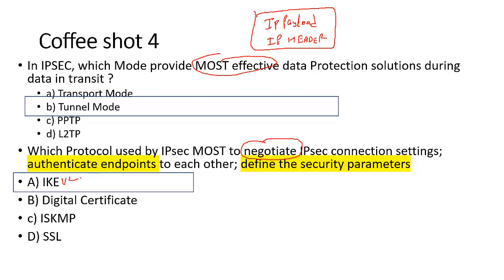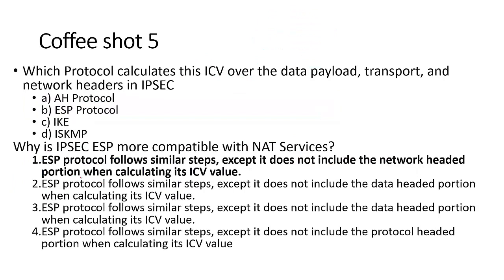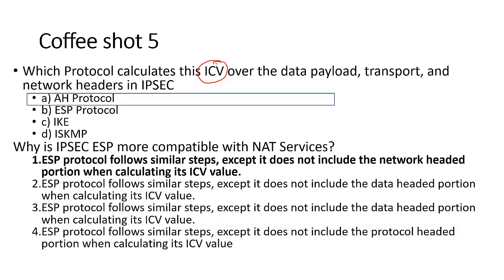Next question: which protocol calculates the ICV (Integrity Check Value) over the data payload, transport, and network header in IPSec? IKE is the Internet Key Exchange; ISAKMP is the overall framework. ICV is more from the authentication point of view. The AH protocol encapsulates over the data payload, transport header, and network header, and creates an AH header on top of it.